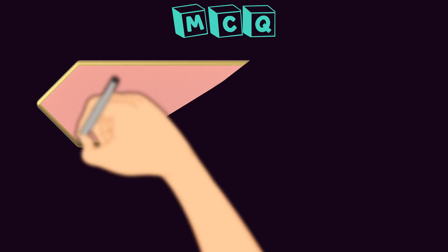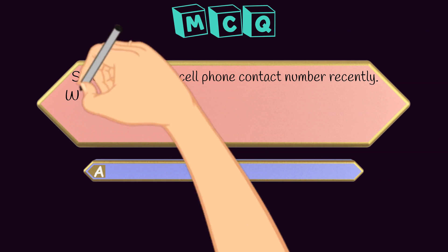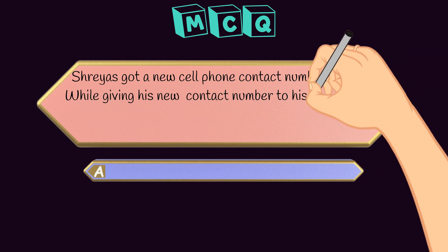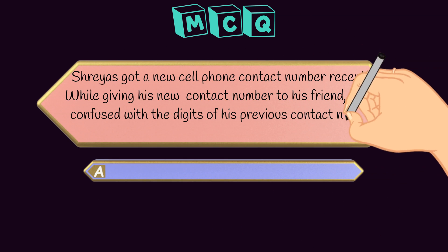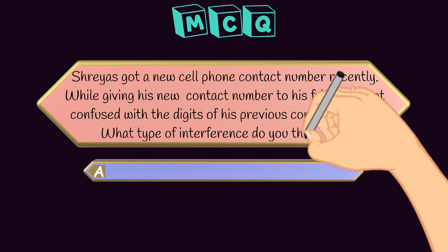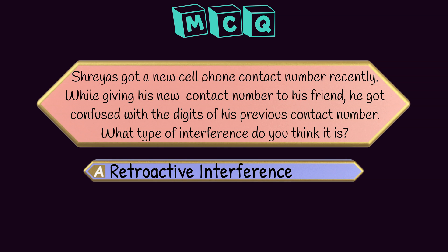Question three: Shrey recently got a new cell phone number. While giving his new contact number to friends, he got confused with the digits of his previous contact number. What type of interference is this? This example best represents proactive interference, where the old phone number interferes with recall of the new one. So the answer is proactive interference.